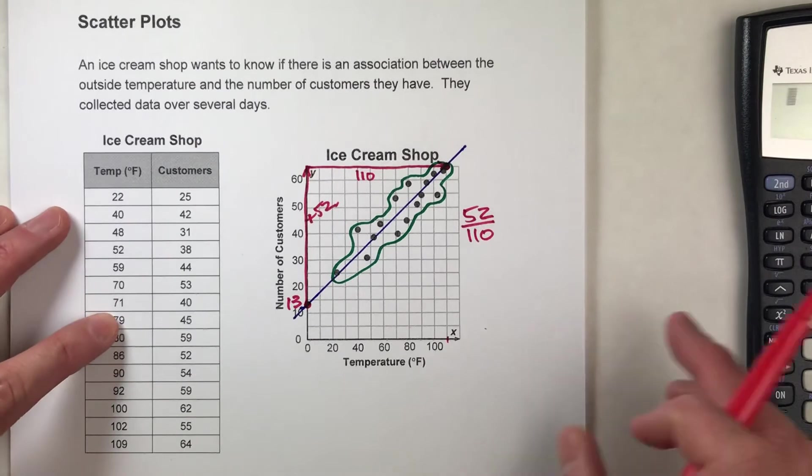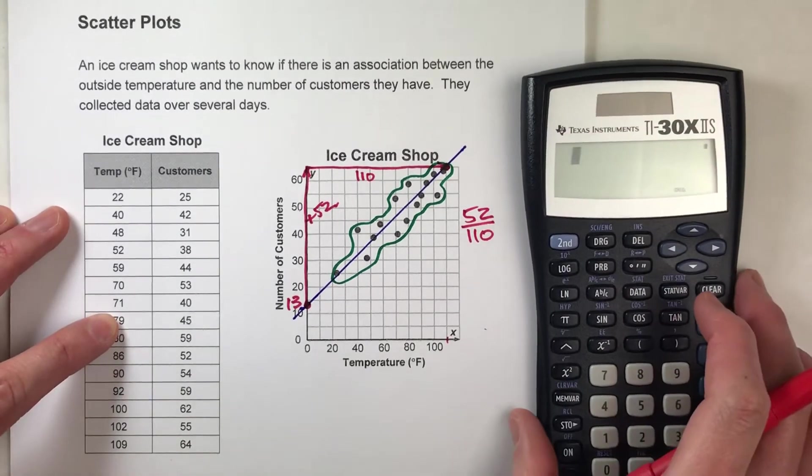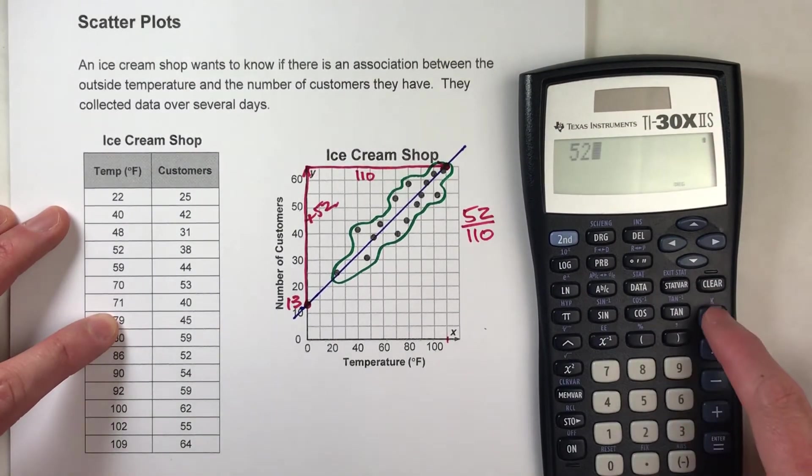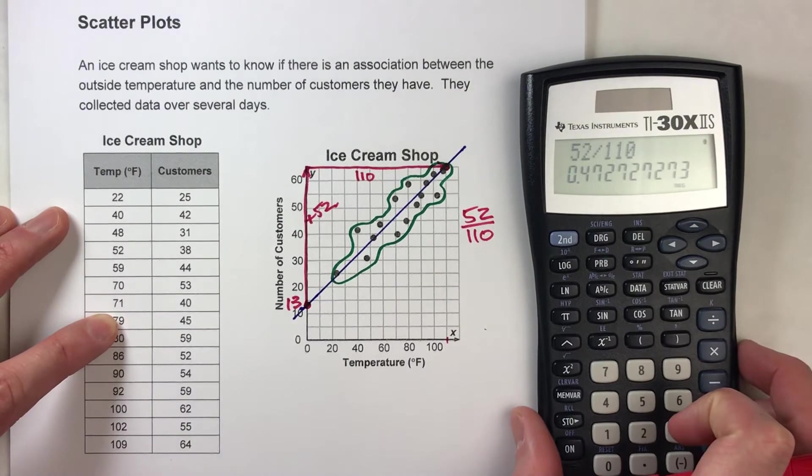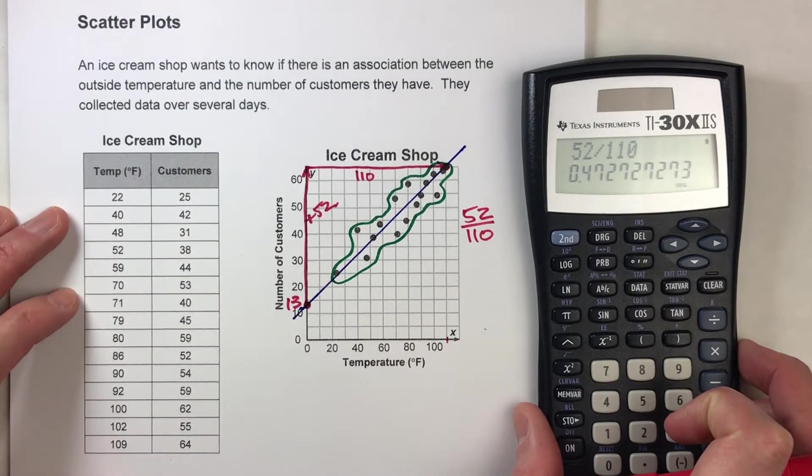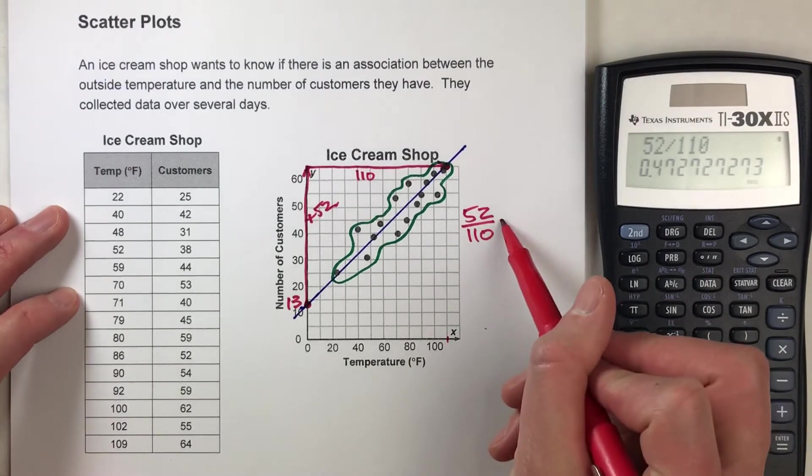And for scatter plots, I always tell my students that they can give their slope as decimals. Since everyone's going to have a slightly different slope, it's nice to have a decimal so we can compare. And 52 divided by 110 is about 0.47.